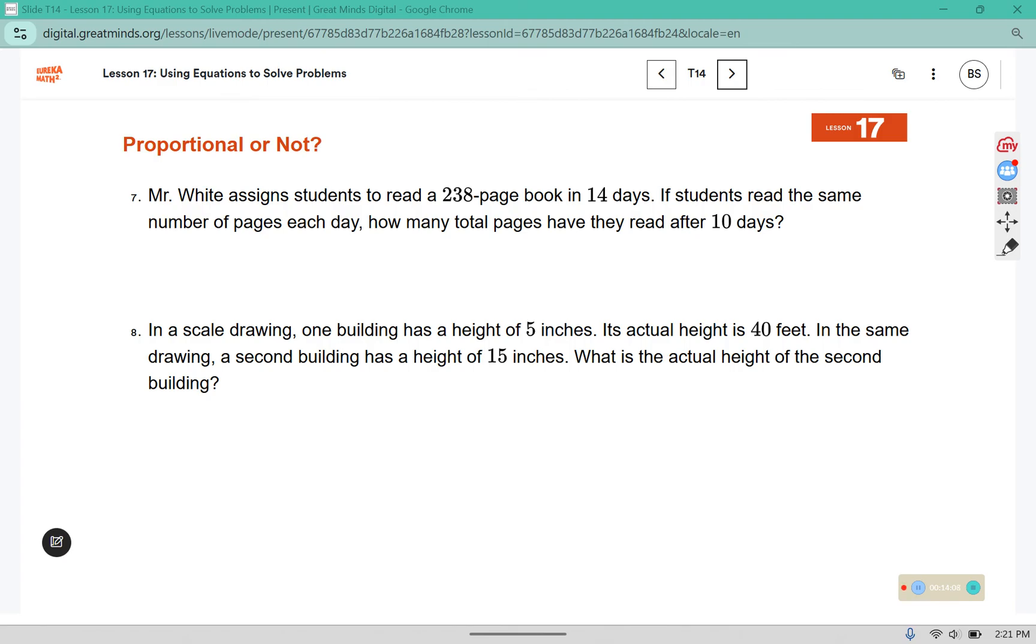Mr. White assigns students to read a 238 page book in 14 days. If students read the same number of pages each day, how many total pages have they read after 10 days? So this one if they read the same number of pages every day that's a constant rate so this is proportional and like I told you earlier typically time is the x value so the other one will be our y value. To find k that constant of proportionality we're going to divide 238 by 14 because those are the sets of numbers that go together and this will tell us k. 238 divided by 14 comes out to 17 pages per day.